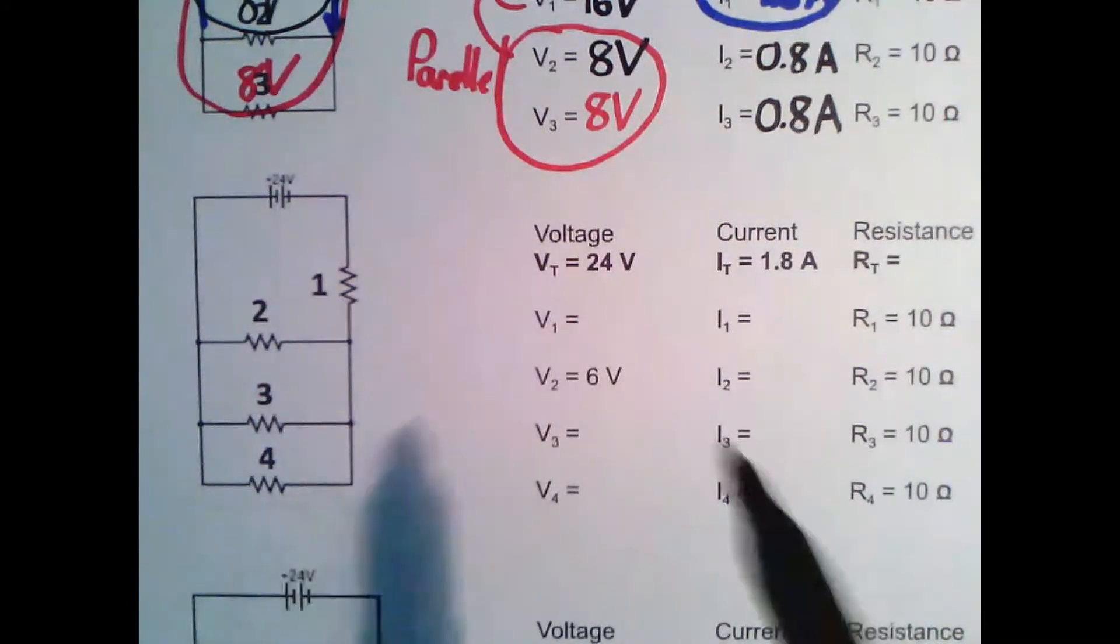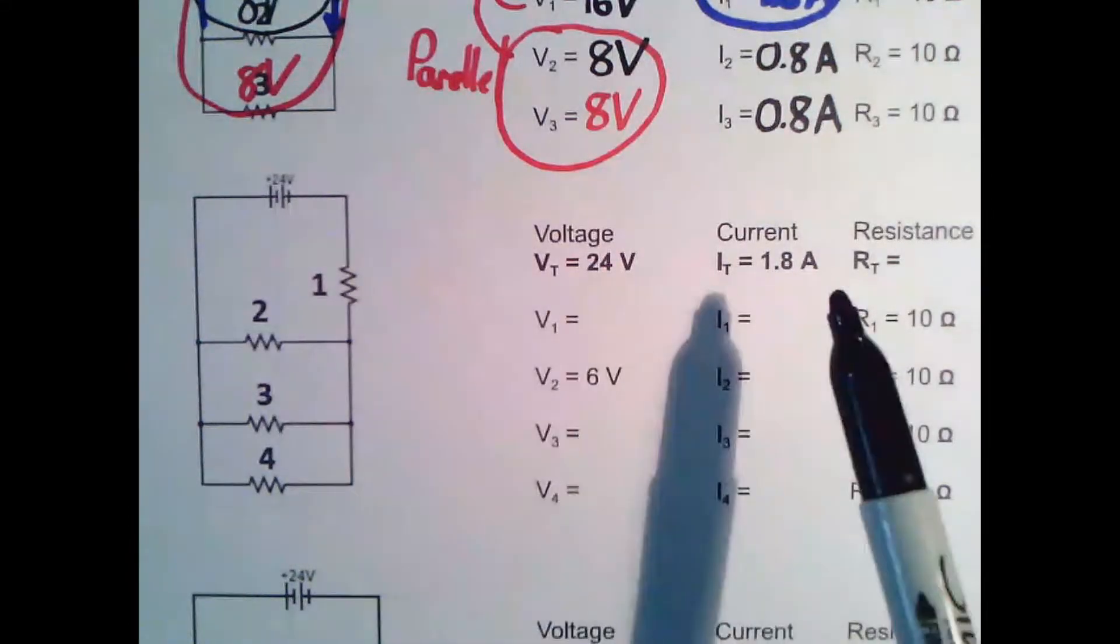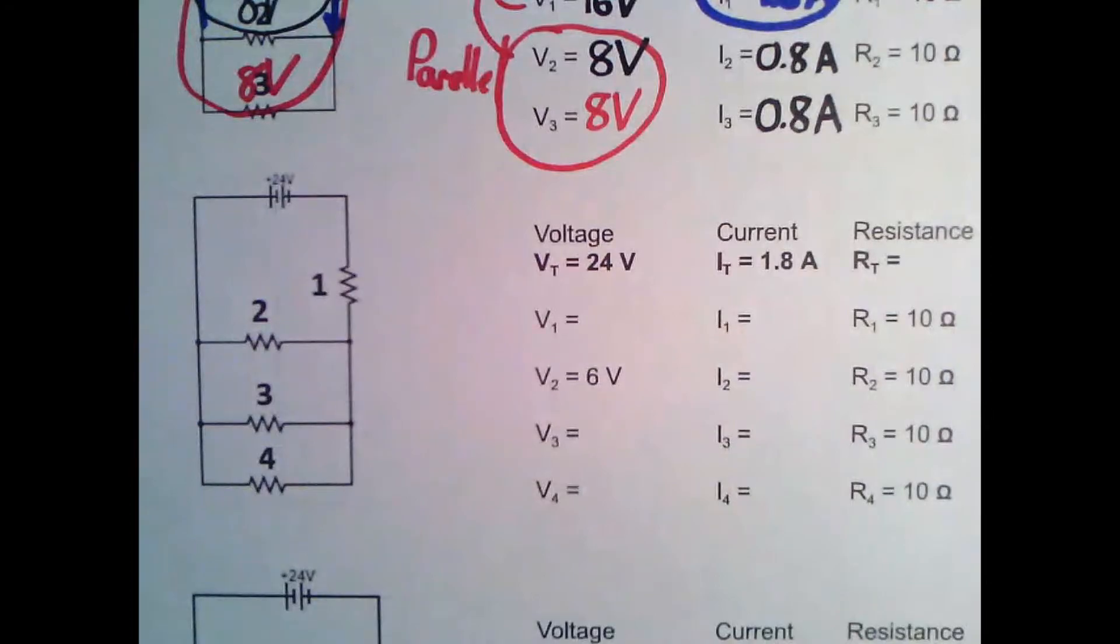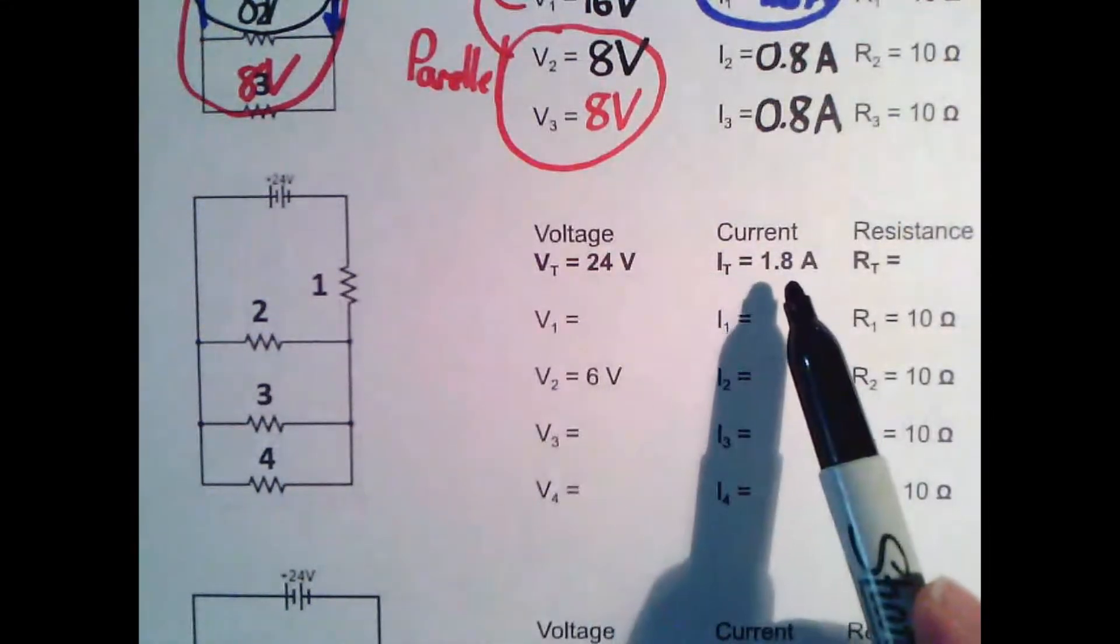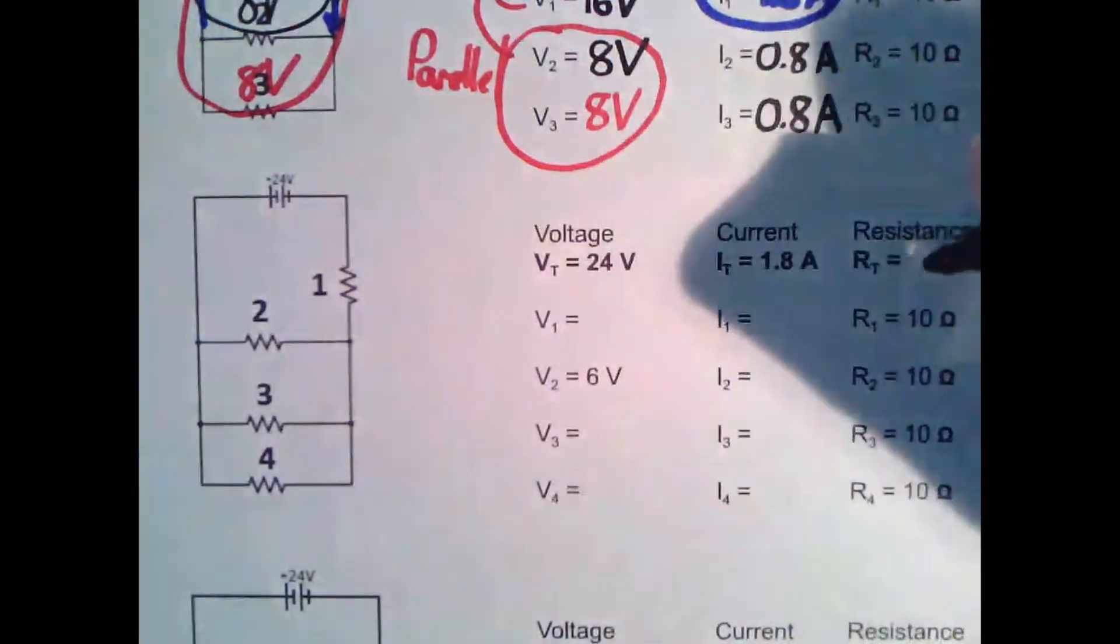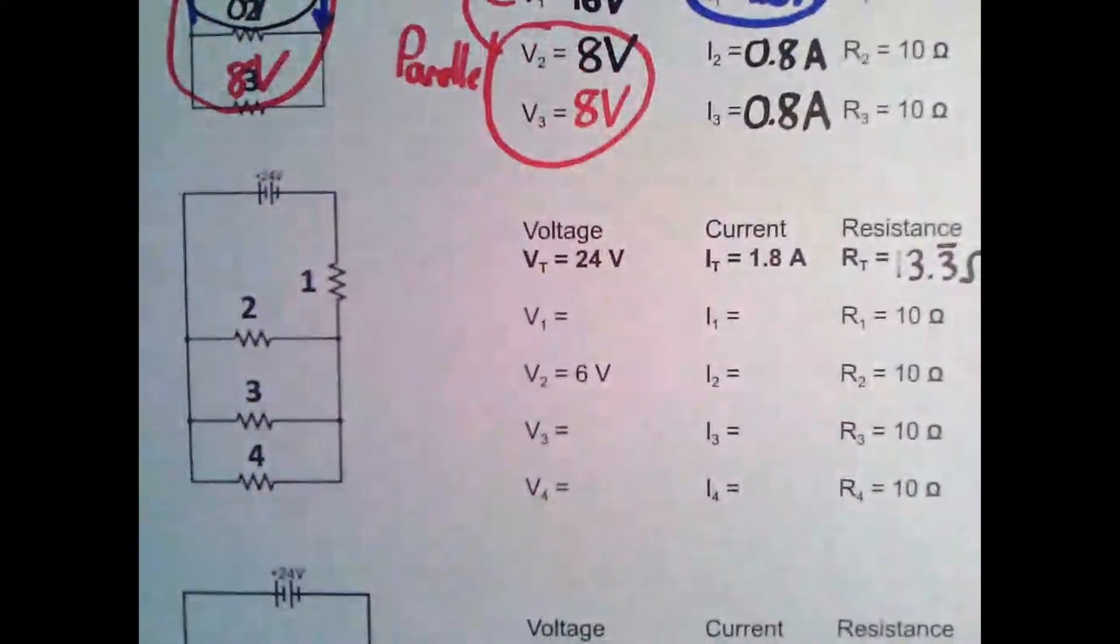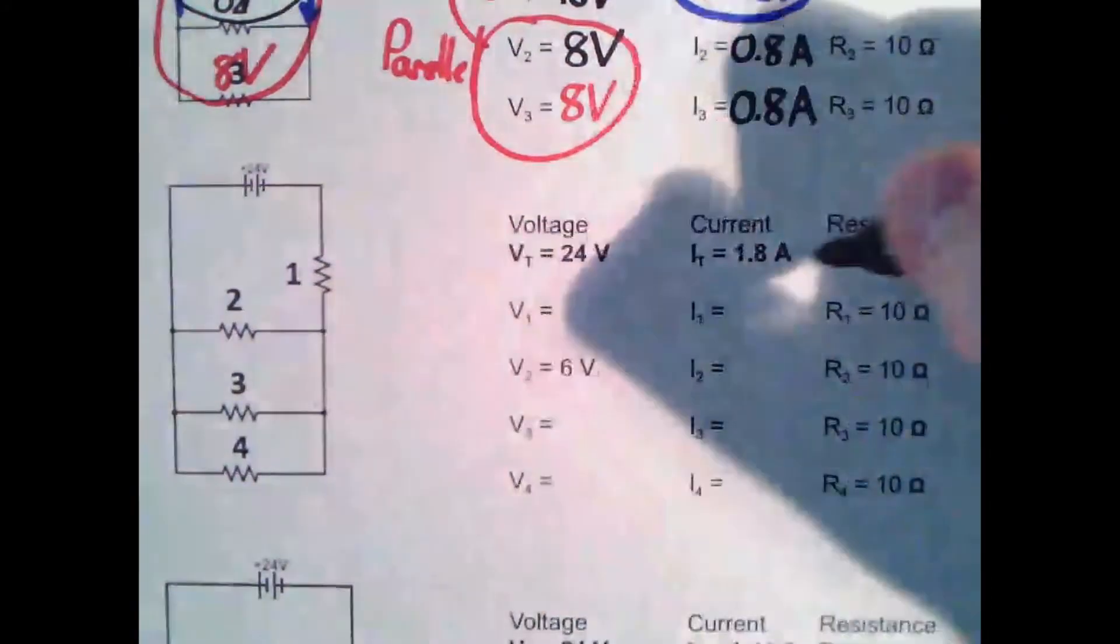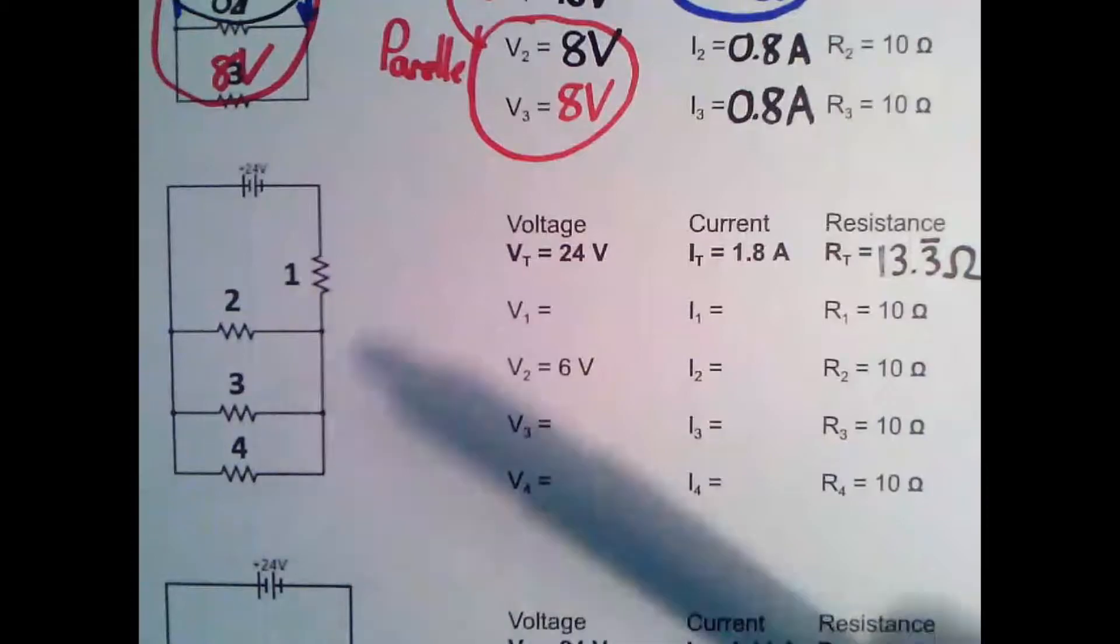So here we've been told the voltage and the currents. Anytime you've been told two of these, you can always find the last one. So here we get some kind of strange decimals, but we do this divided by 1.8 and we get 13 point three. It repeats forever. Sorry about the weird decimals, but it happens in electricity a lot.